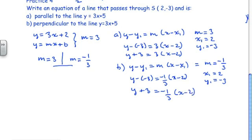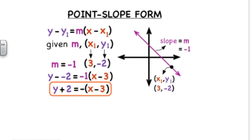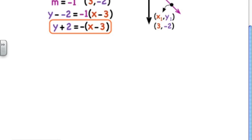That is the equation of a line perpendicular to y equals 3x plus 5 and passing through the point (2, negative 3). The last slide is a summary of the point-slope form, showing how given a slope of negative 1 and a point (3, negative 2), you use y minus y₁ equals m times x minus x₁ to write the equation of the line — a handy reference for when you're doing your homework. We'll see you in class tomorrow working on 6.4, point-slope form of the line. Thanks for doing your homework!